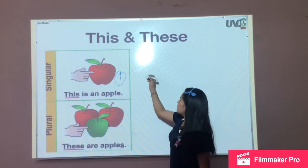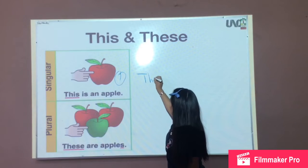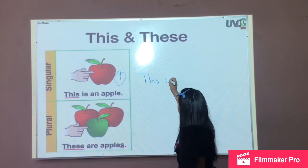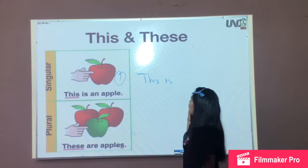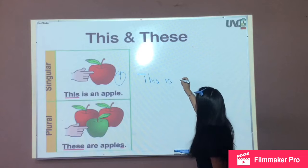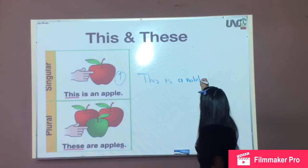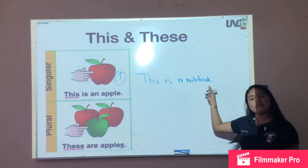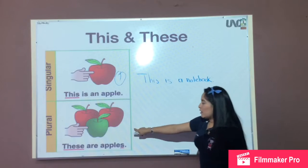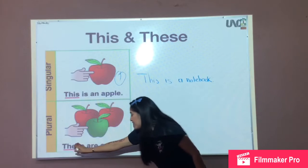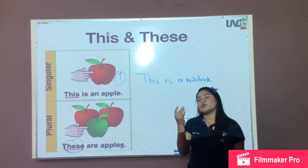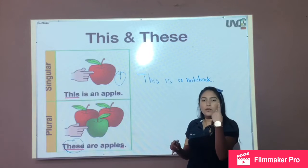We can use this in another sentence. This is a notebook. For example, this is a notebook. So, this is for plural — one, two, three, or more than one.